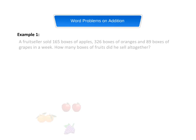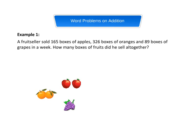Example 1. A fruit seller sold 165 boxes of apples, 326 boxes of oranges, and 89 boxes of grapes in a week. How many boxes of fruits did he sell altogether?